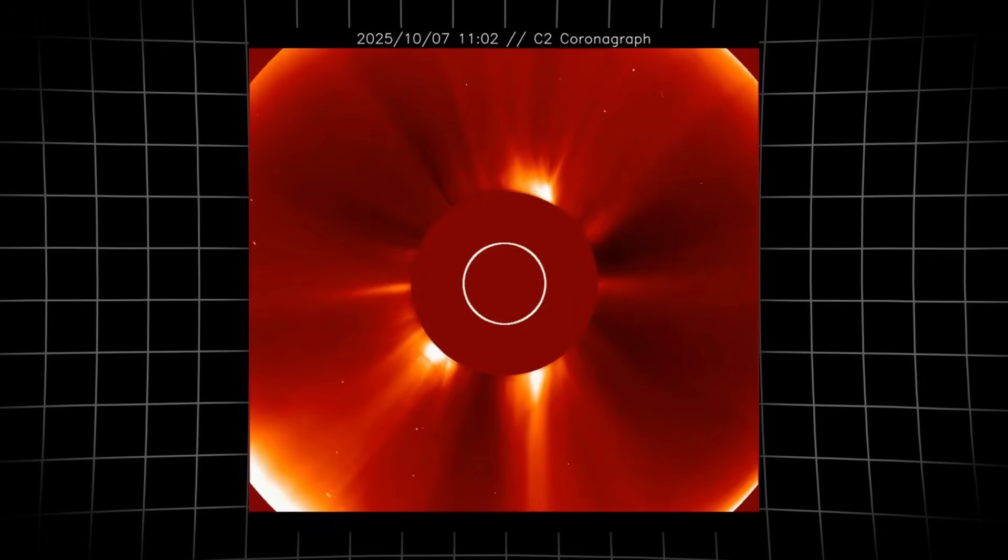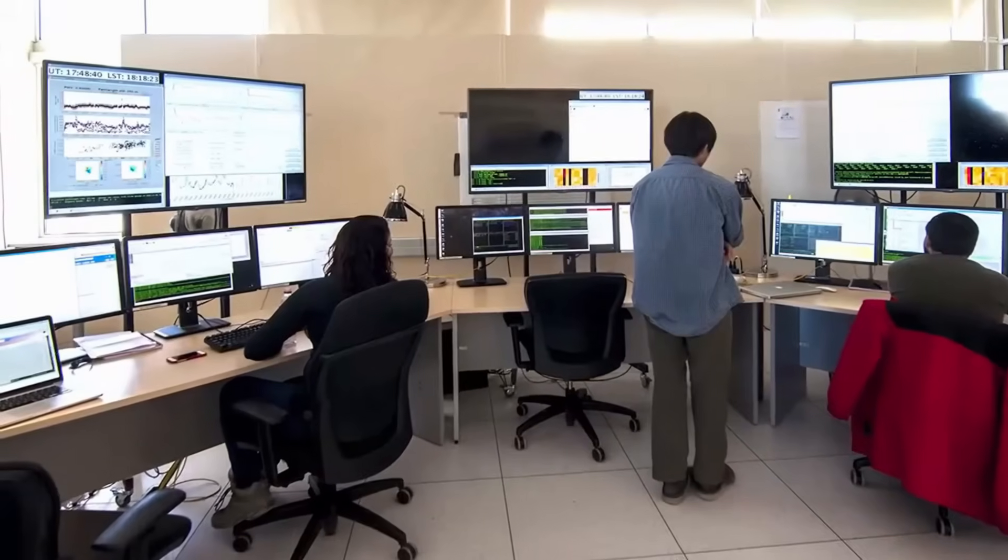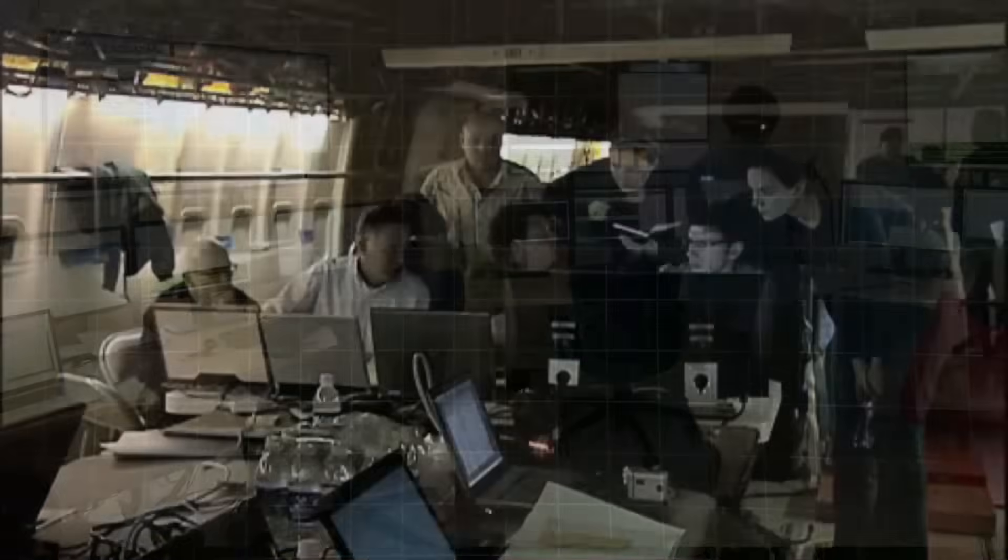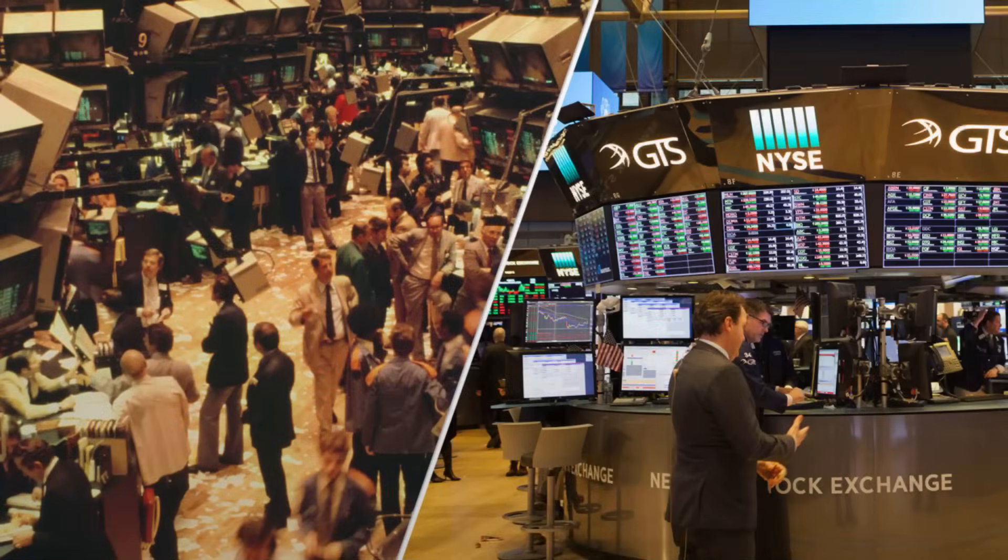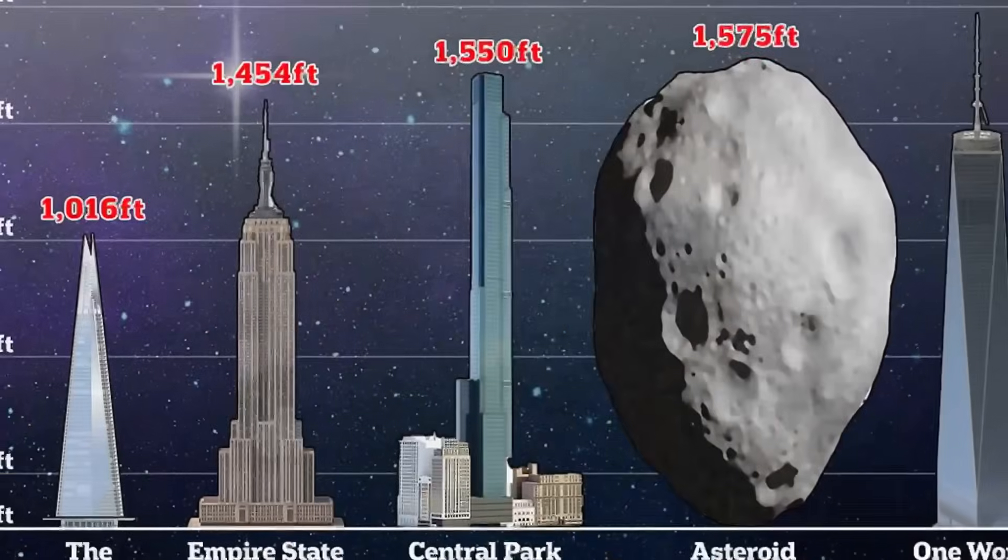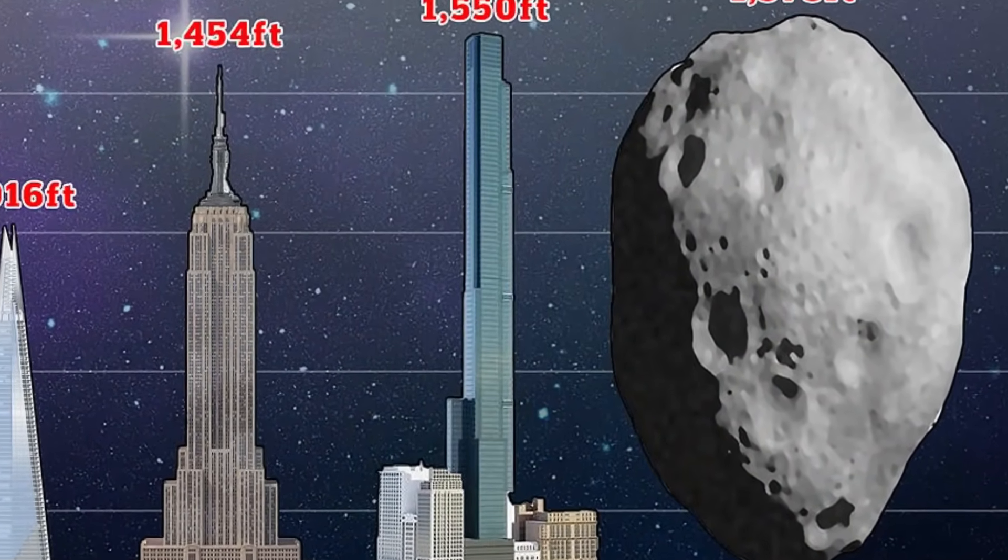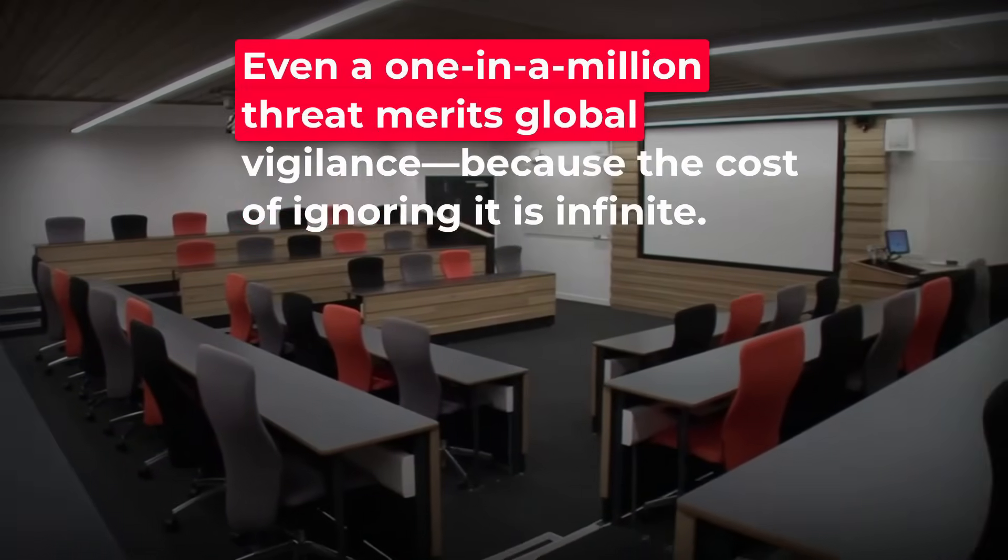For Loeb, the real danger isn't the odds—it's the cost of being wrong. He points out that if 3i-Atlas reappears from behind the sun on a new heading, the question is no longer academic. That outcome could upend assumptions not just in astronomy but in policy and finance. The scale of the object, measured in kilometers not meters, only sharpens his argument.